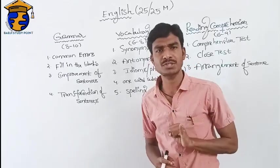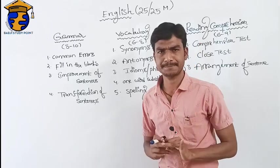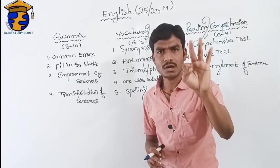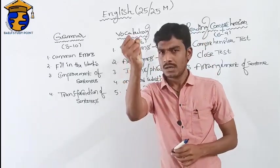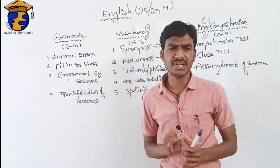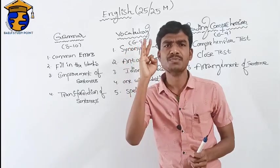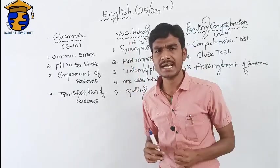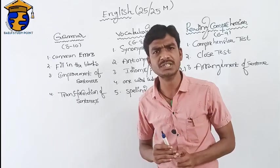If you are going to deal with the entire grammar, the most important chapters are: first, parts of speech; second, tense; third, articles; fourth, if clause; fifth, clauses; sixth, kinds of sentence; seventh, transformation of sentence; eighth, degrees of comparison; ninth, active voice and passive voice; tenth, direct and indirect speech; eleventh, question tag; and twelfth, subject-verb agreement or concord.